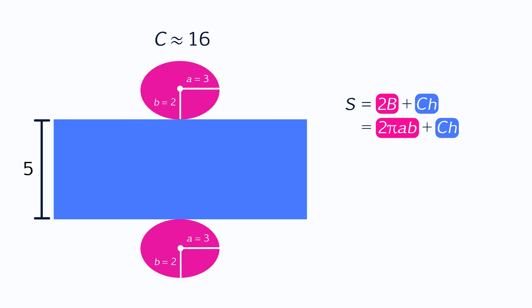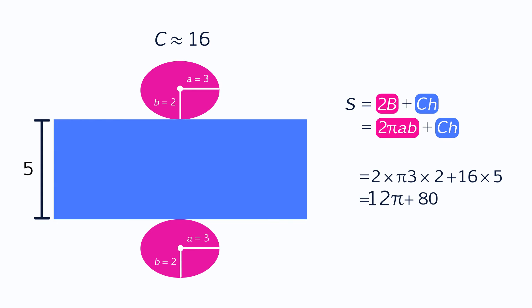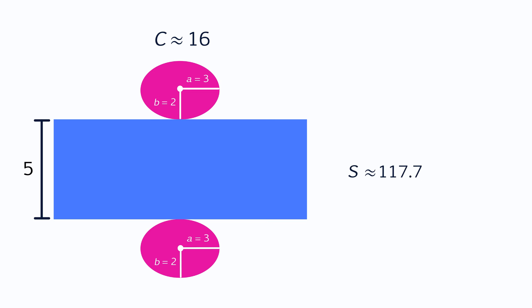Now you can start to calculate the surface area. You insert 3 for the length of the semi-major axis, 2 for the semi-minor axis, 16 for the circumference, and 5 for the height. So you get 2 times pi times 3 times 2 plus 16 times 5. 2 times 3 times 2 is 12, and 16 times 5 is 80. You're left with 12 pi plus 80, which is approximately 117.7. This means that the total surface area of this elliptical cylinder is about 117.7.